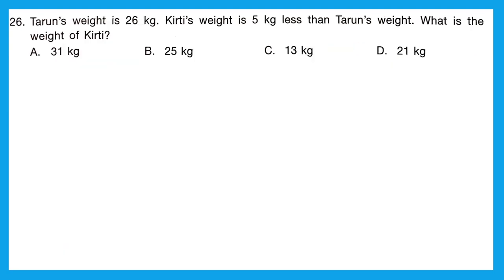Question 26: Tarun's weight is 26 kg. Kirti's weight is 5 kg less than Tarun's. We subtract 5 from 26 and get 21. So the weight of Kirti is 21 kg. Option D.